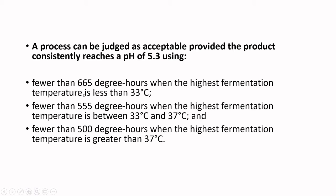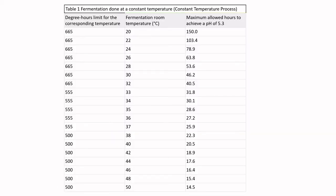These are the cutoffs. When tracking, if your calculated degree hours are less than the corresponding limit at the maximum temperature reached, then based on extensive data collection from CFIA the product is considered safe. The simplest approach is to look at a table — no math required beyond knowing how many hours it took to reach pH 5.3 or below, and what the maximum room temperature was.